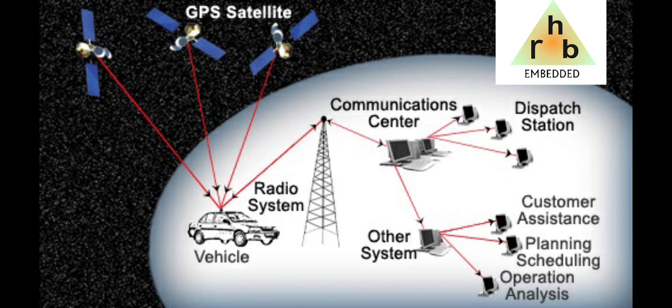Each GPS satellite contains multiple atomic clocks that contribute very precise time data to the GPS signals. GPS receivers decode these signals, effectively synchronizing each receiver to the atomic clocks. This enables users to determine the time to within 100 billionths of a second without the cost of owning and operating atomic clocks.